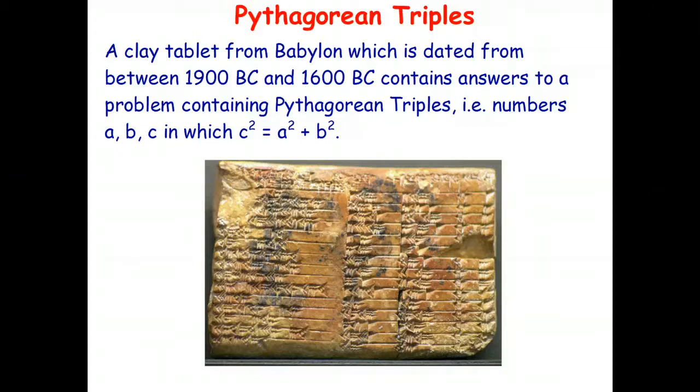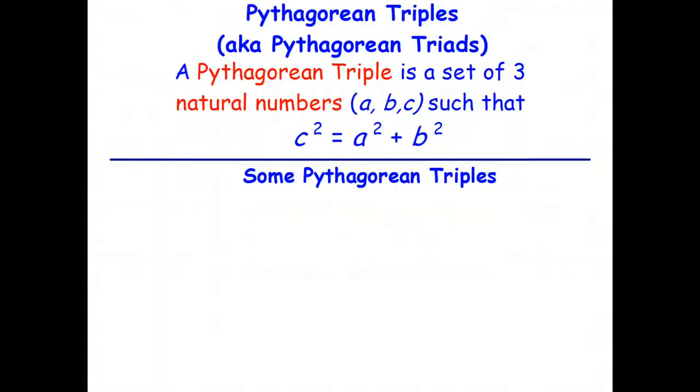So what exactly is a Pythagorean triple? Well a Pythagorean triple, also known as a Pythagorean triad, is just a set of three natural numbers, which means whole numbers bigger than zero, such that the largest number c squared is equal to the sum of the squares of the two smaller numbers.